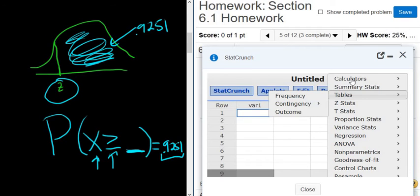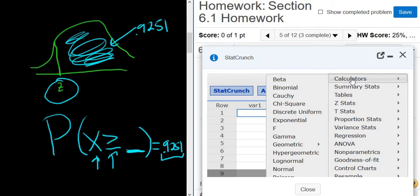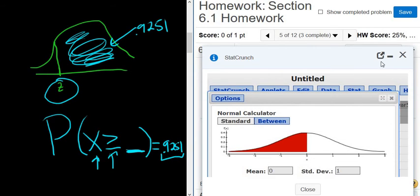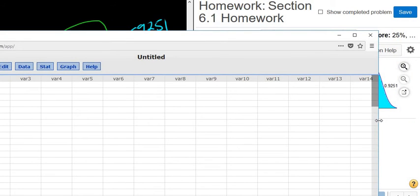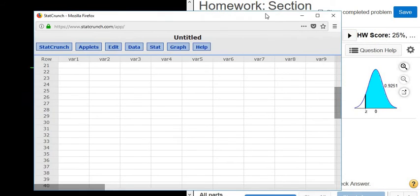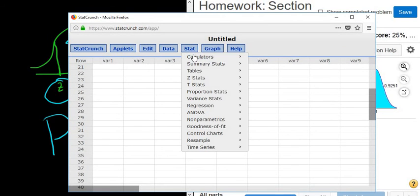So we go to Stat, Calculators, and then we go to Normal. Actually, let me detach this so it's easier to see. Stat, Calculators, Normal.